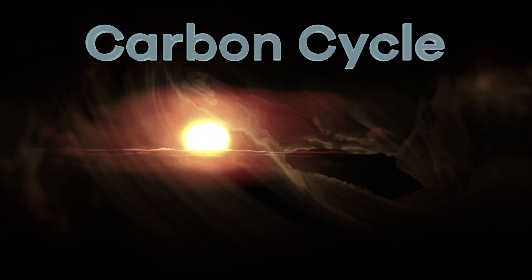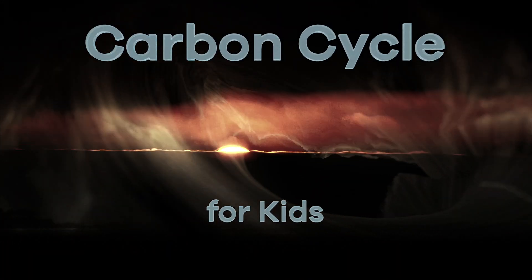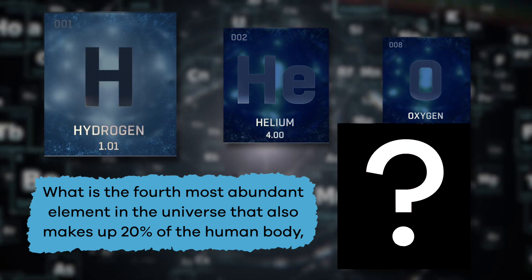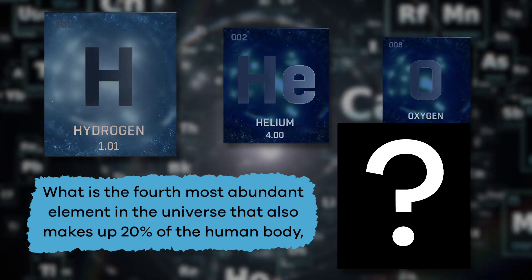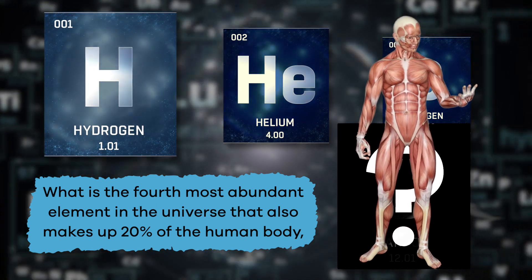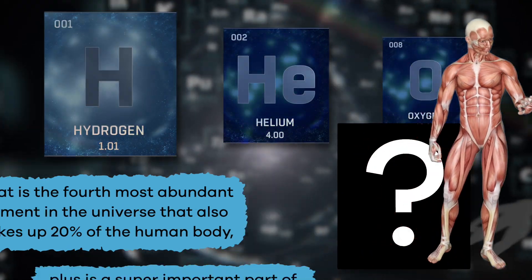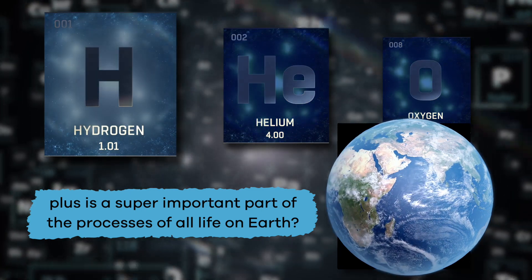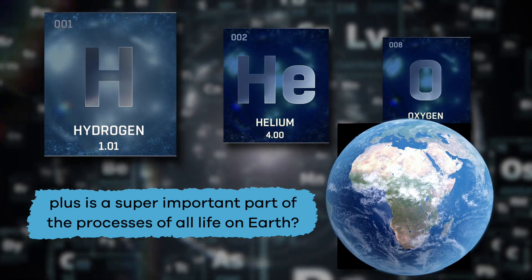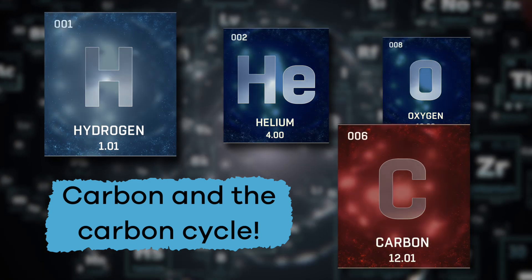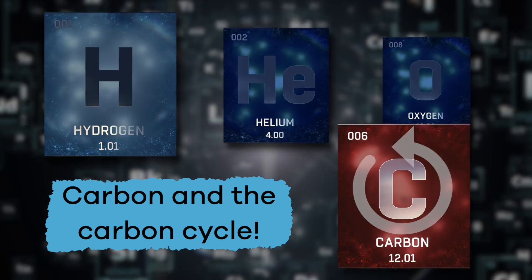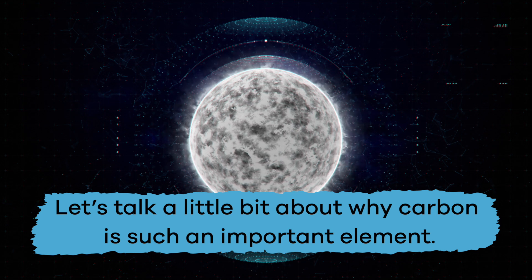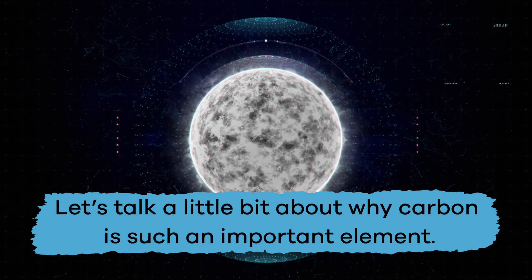The carbon cycle for kids! What is the fourth most abundant element in the universe that also makes up 20% of the human body, plus is a super important part of the processes of all life on earth? It is carbon — and the carbon cycle. First, let's talk a little bit about why carbon is such an important element.